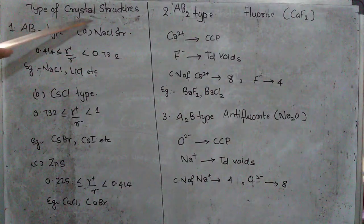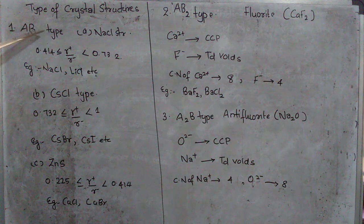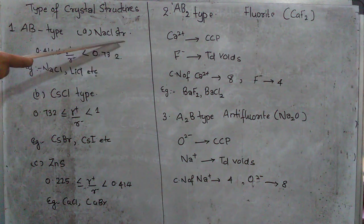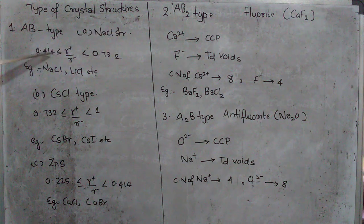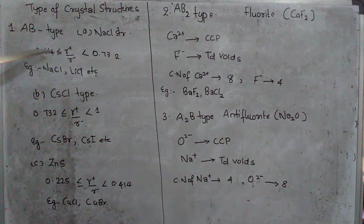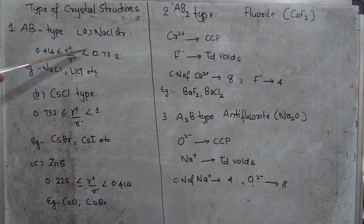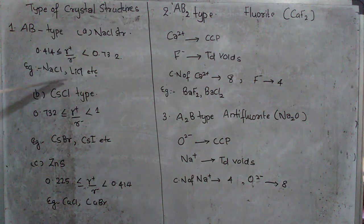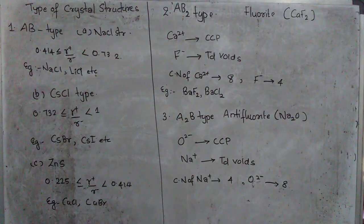Next term is the type of crystal structures. In that, first one will be AB type crystal structure. In which, the first one will be NaCl structure or rock salt structure. The radius ratio will be in the range 0.414 to 0.732 where it can be equal to 0.414. Another example should be LiCl, AgCl, etc.